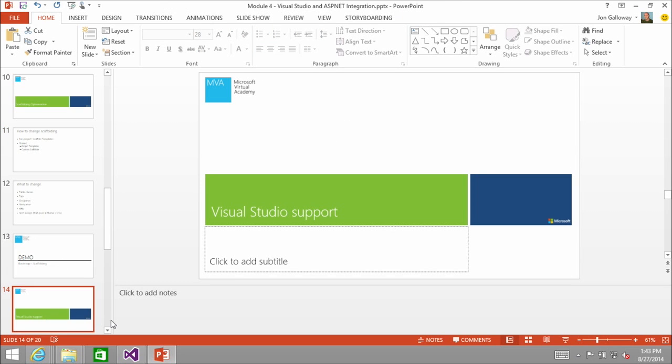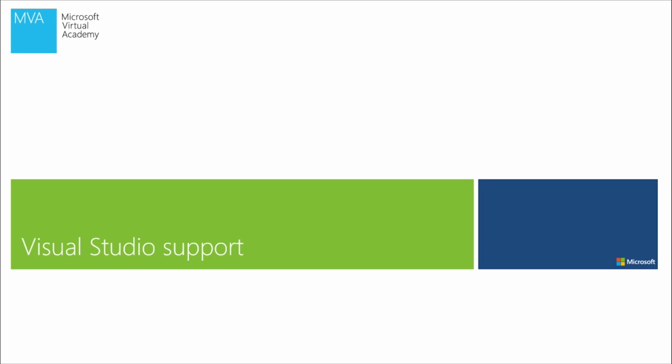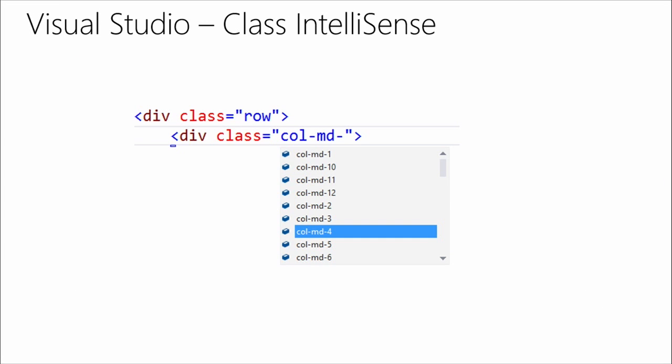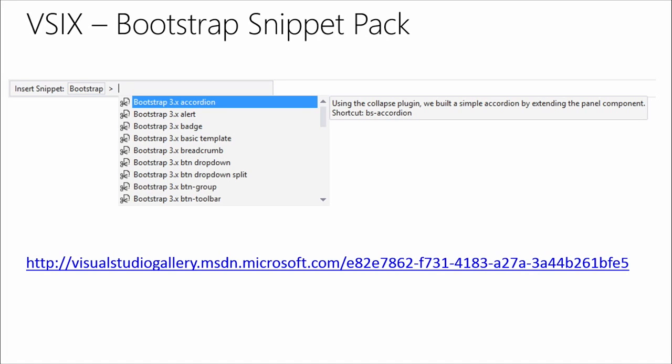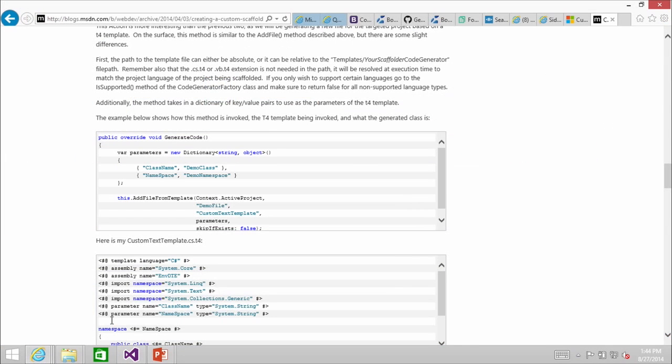Now let's look at Visual Studio support — we've been looking at this all day, so I'm just going to recap. One is class IntelliSense — super, super useful. You can just go in and start editing and that's going to work everywhere. If you install Web Essentials, which installs on Express and every version of Visual Studio 2013, that brings in things like missing class detection — very helpful. That's where it says 'you used button-primary but you didn't say it was a button and that's not going to work.'